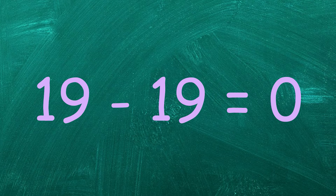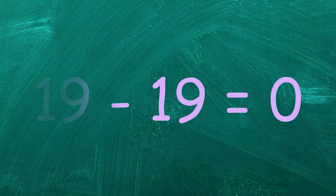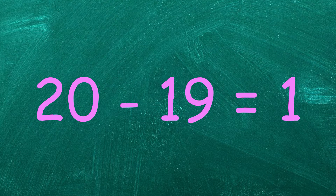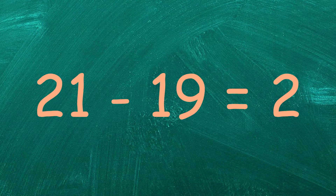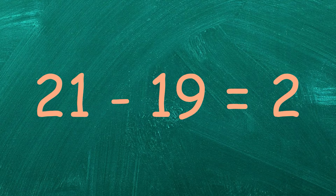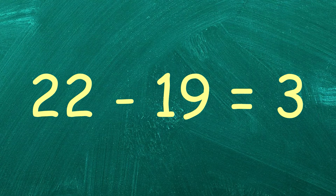19 minus 19 equals 0. 20 minus 19 equals 1. 21 minus 19 equals 2. 22 minus 19 equals 3.